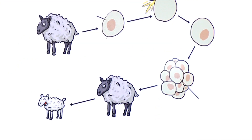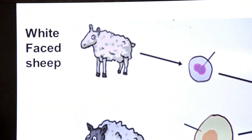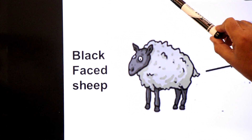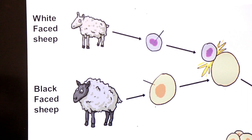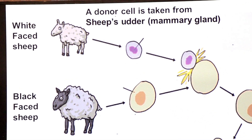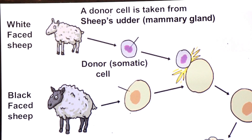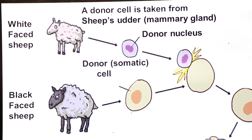Now let's discuss Dolly sheep's cloning in detail. Dolly sheep was created by artificial cloning using the somatic cell nuclear transfer technique, and two sheep were used. One was a white-faced sheep and the other was a black-faced sheep. The white-faced sheep was the one to be cloned. A donor cell was taken from the white-faced sheep's udder — its mammary glands. This is called the donor nucleus, and it was a somatic (body) cell — a donor somatic cell. This nucleus is called the donor nucleus.